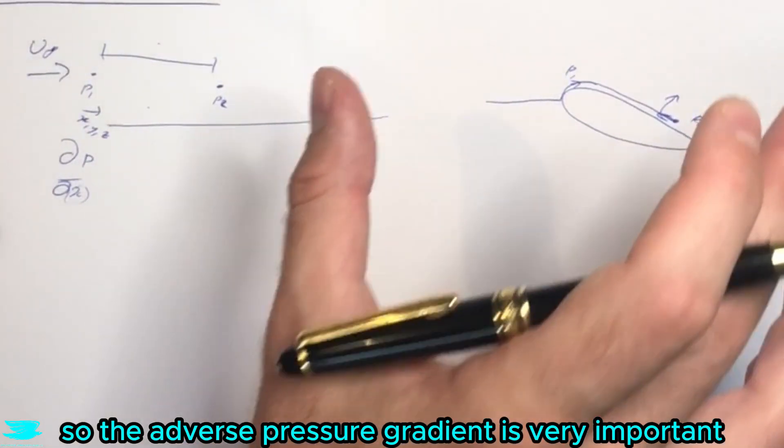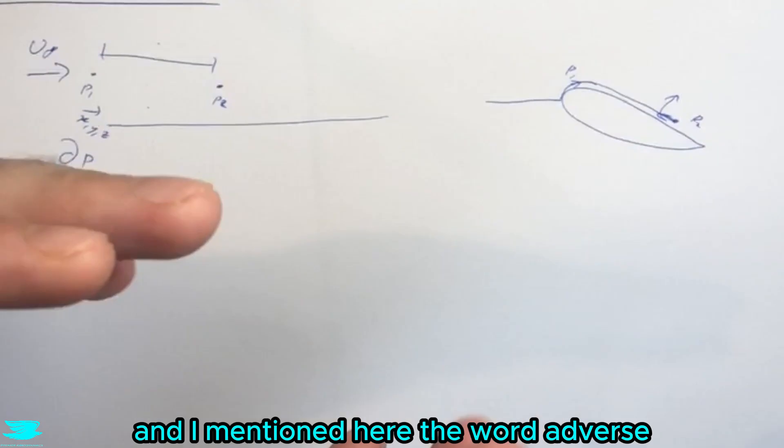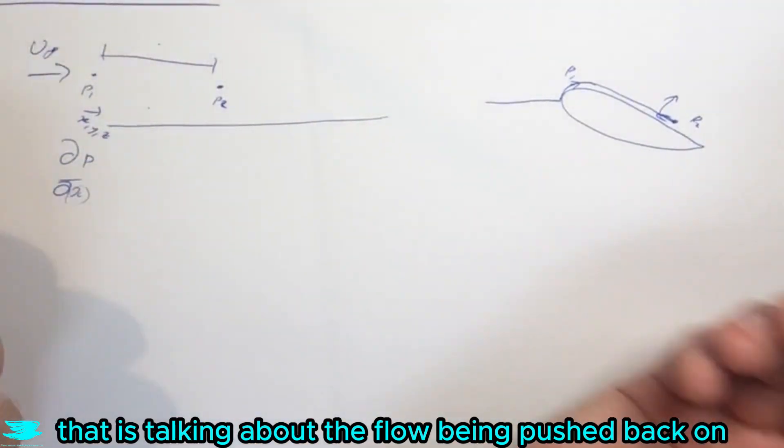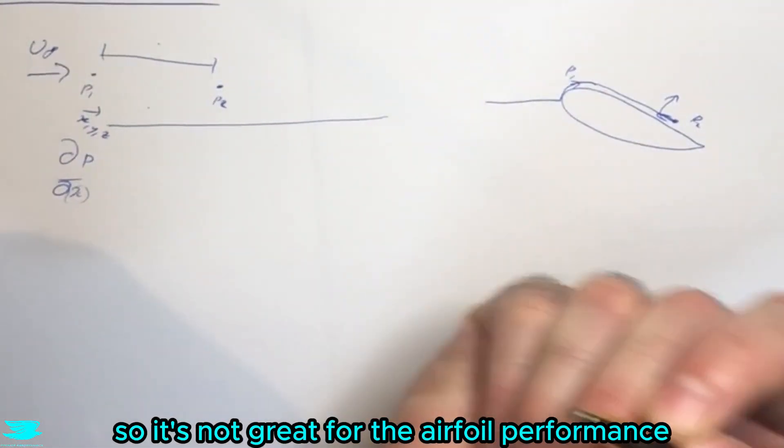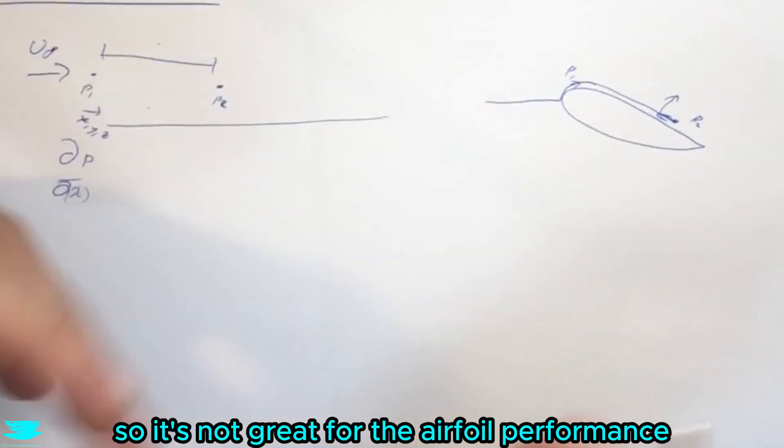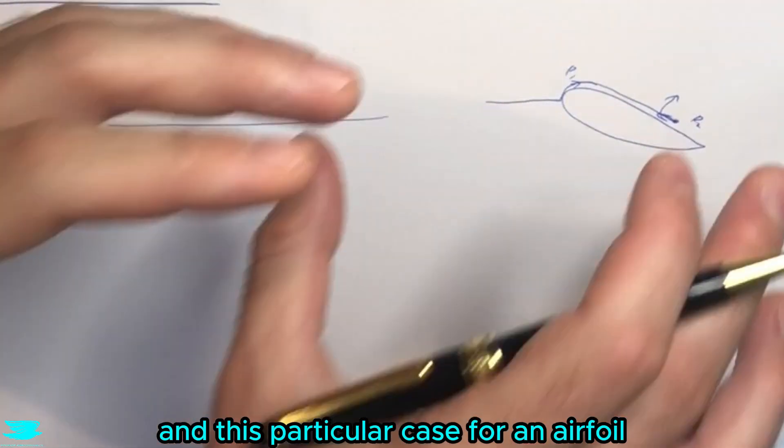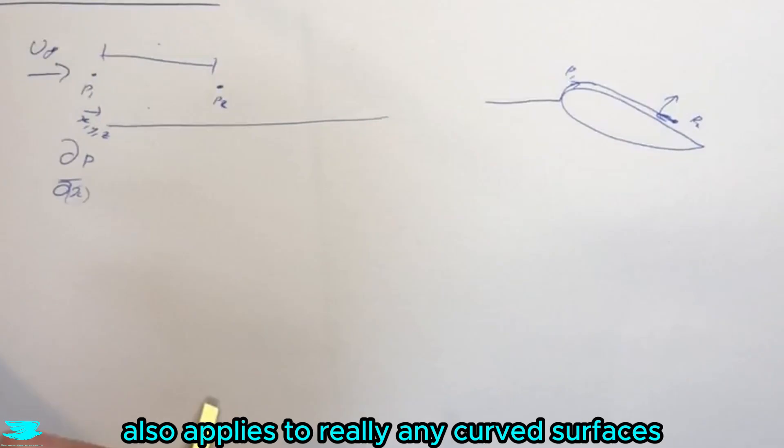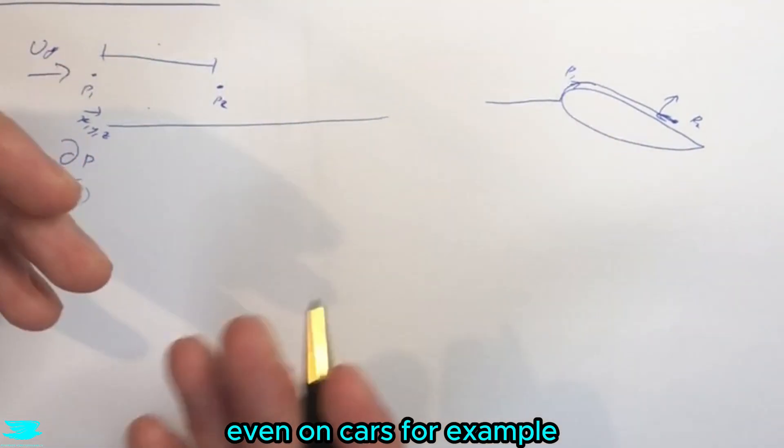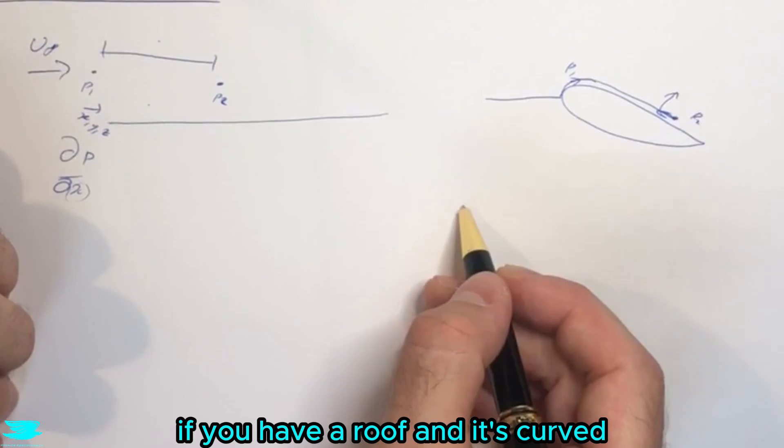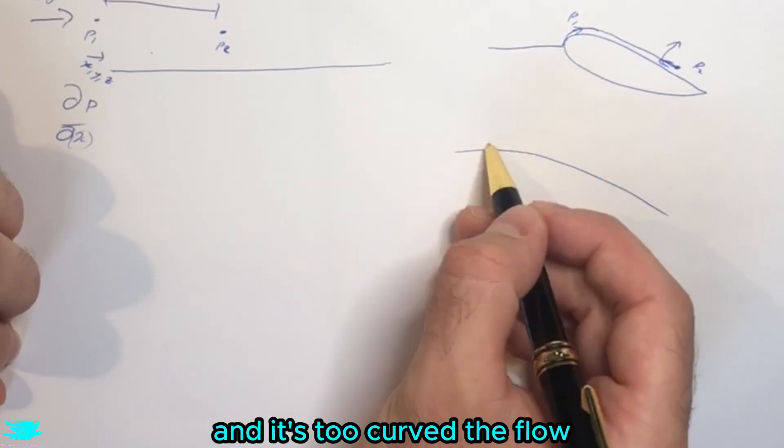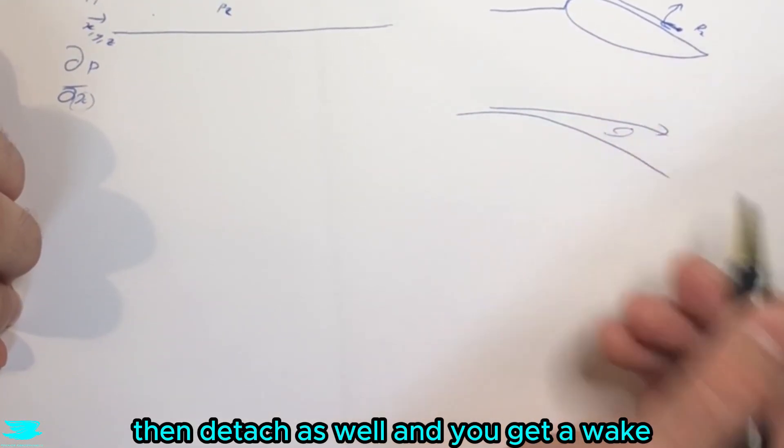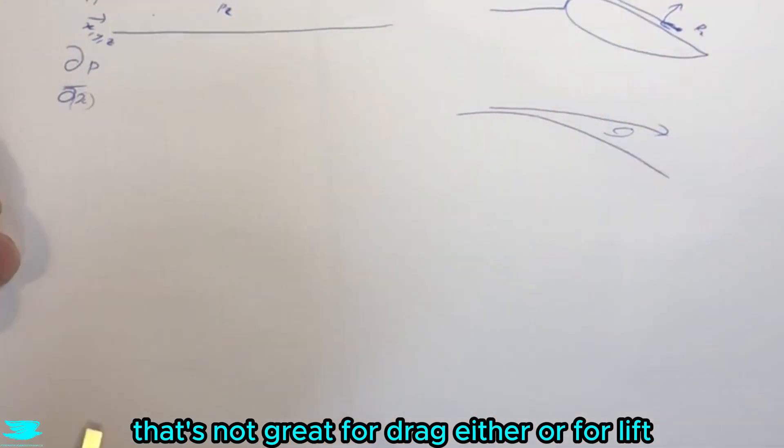The adverse pressure gradient is very important. The word adverse is talking about the flow being pushed back on, so it's not great for airfoil performance. This particular case for an airfoil also applies to any curved surfaces - even on cars, for example. If you have a roof that's too curved, the flow will detach as well and you get a wake, and that's not great for drag or lift.